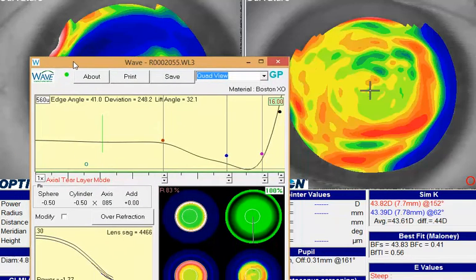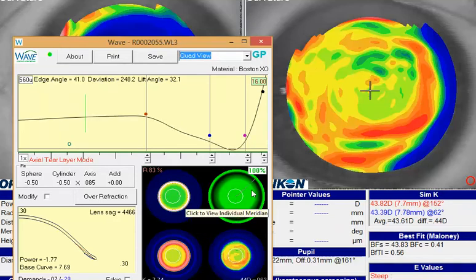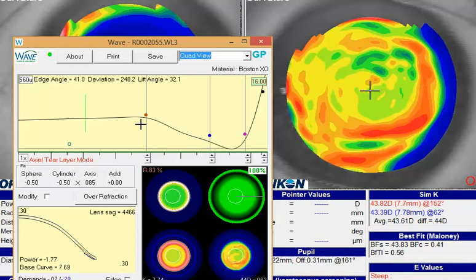If we look first at the right lens, it sounds like it's fitting fairly well overall. If we look at your design, you do have a little bit of a quick steep slope here coming into the landing spot, which is at about 13.4 millimeters.